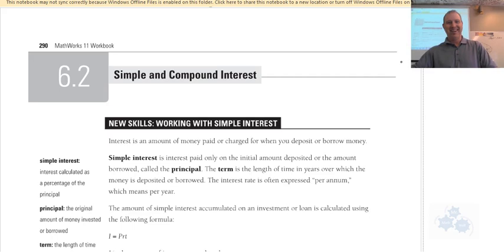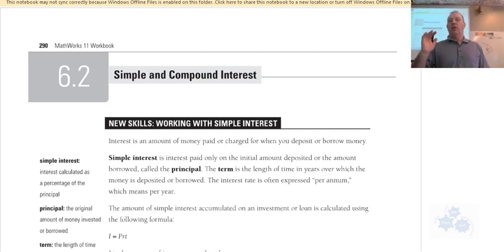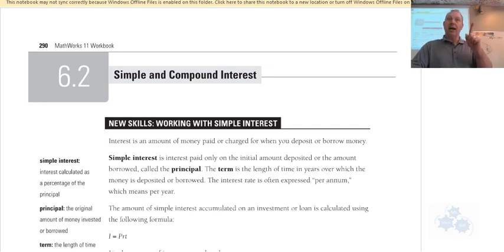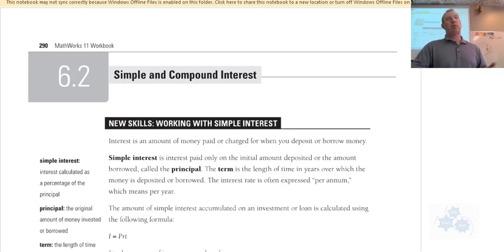Welcome to 6.2 - Simple and Compound Interest. Page 290 in your workbooks. This is very important stuff. When you're investing money or taking out a loan to buy a car or a house, there's something called interest. If I borrow money from the bank or a lending institution, I have to pay that money back plus interest. Interest is basically the cost of using someone else's money.